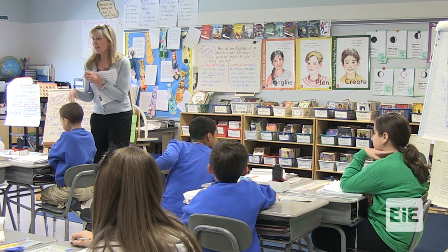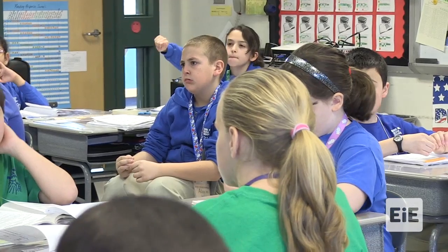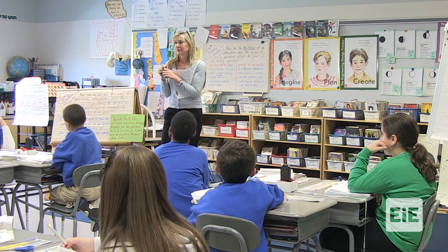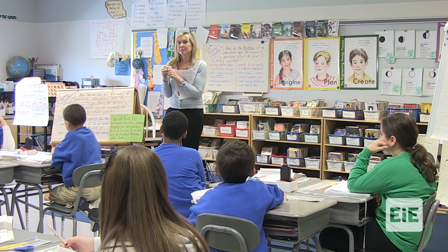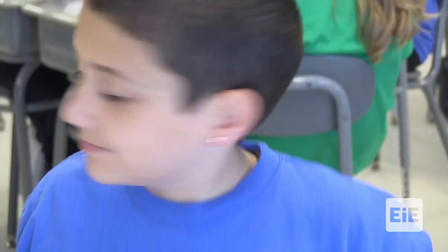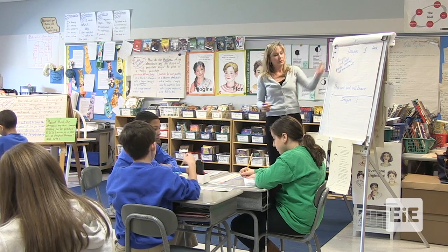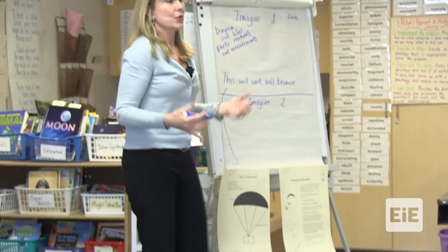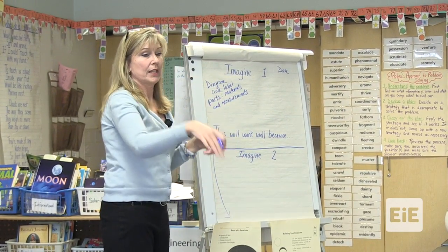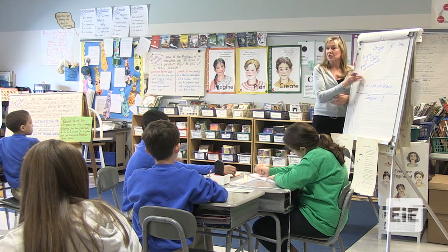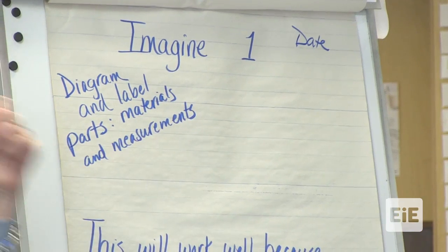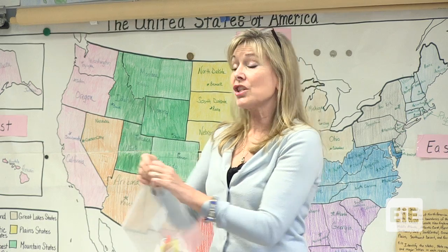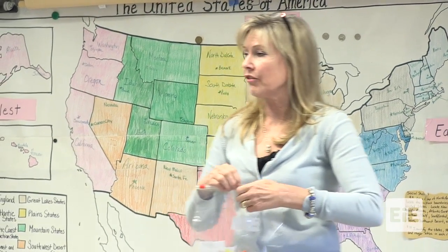What if it's smaller than 30? I wonder if anybody could even get close to that. Turn to your Imagine page — imagine one and imagine two. Think about what your parachute might look like. Your design is your own. Draw your design, label the materials, label the measurements — how many inches for the radius, how many inches for the suspension lines, all of that.